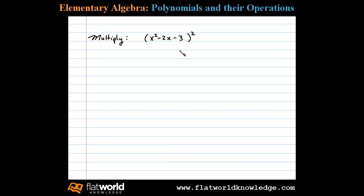Here we're asked to square this trinomial. We'll begin by rewriting it as x squared minus 2x minus 3 times itself.